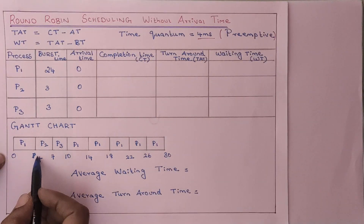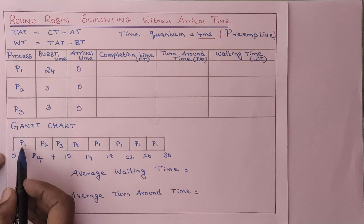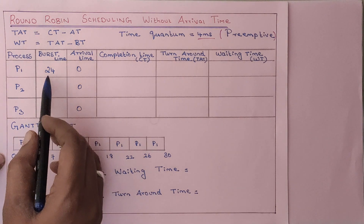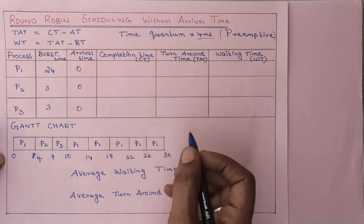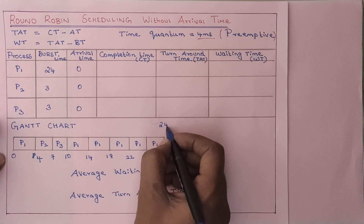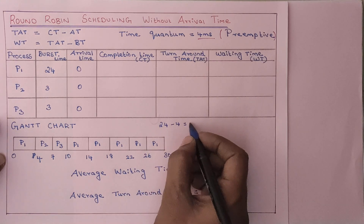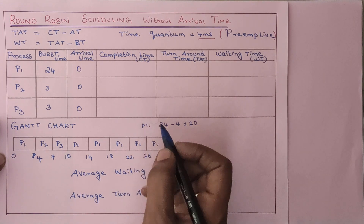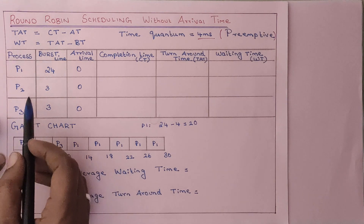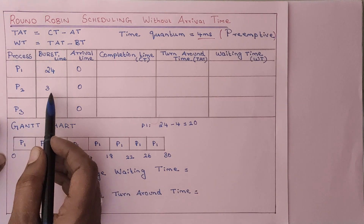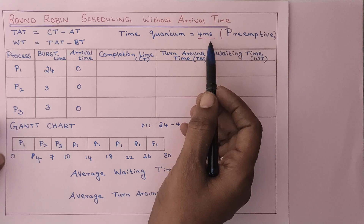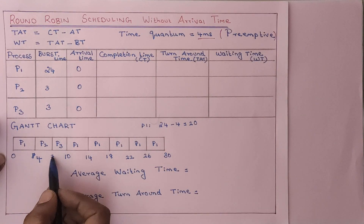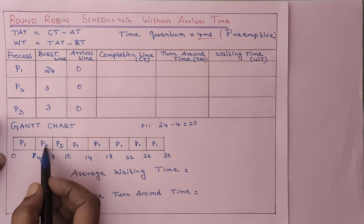From 0 to 4 milliseconds, process P1 will execute and the control will transfer to the other process. The burst time of P1 is 24, so after working 4 milliseconds, 20 milliseconds of jobs are left. Now the control will transfer to P2. P2 actually needs 3 milliseconds to complete its job, but the time quantum is 4 milliseconds. If the burst time is less than the time quantum, it is not an issue. So from 4 to 7, P2 will be allocated.